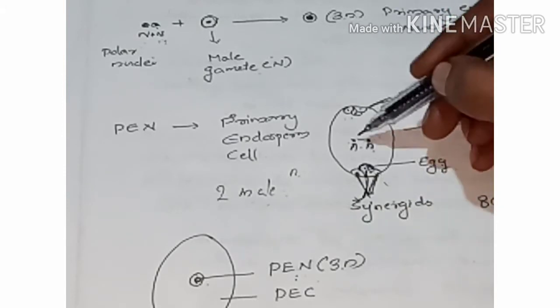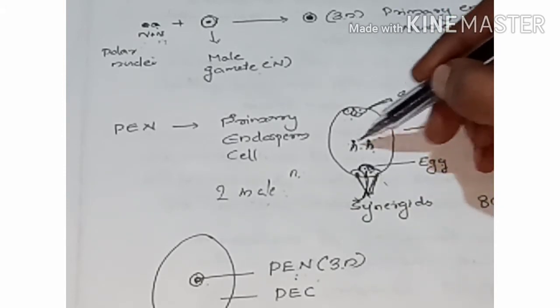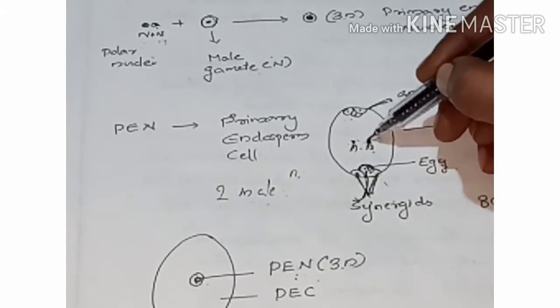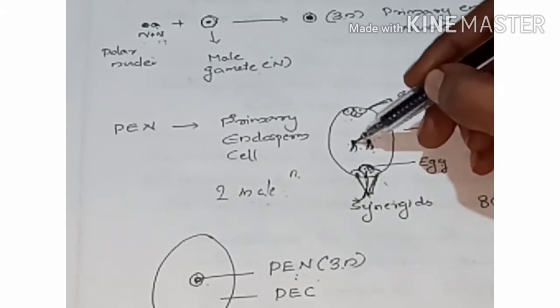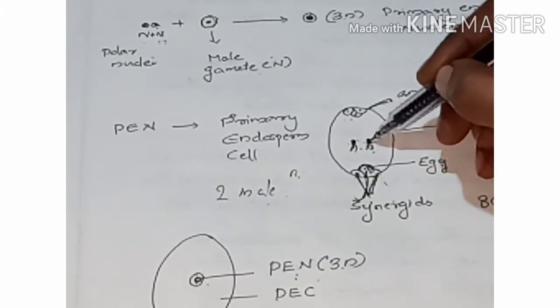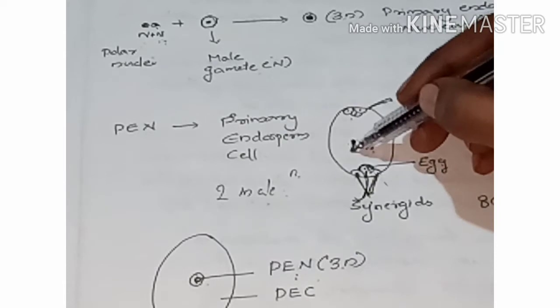The embryo sac contains two polar nuclei. Each polar nucleus is haploid.